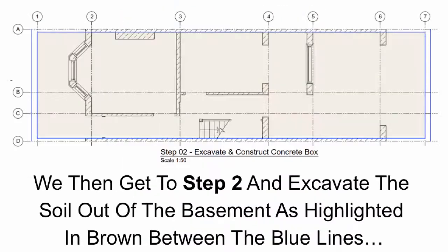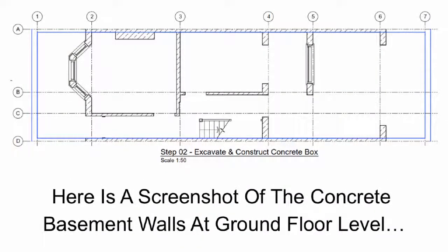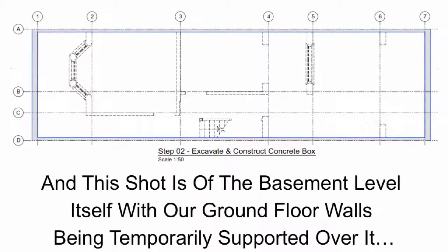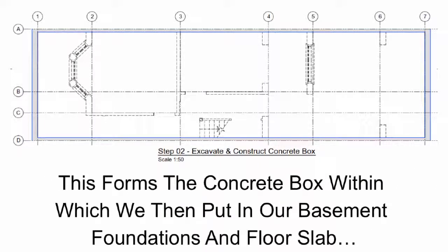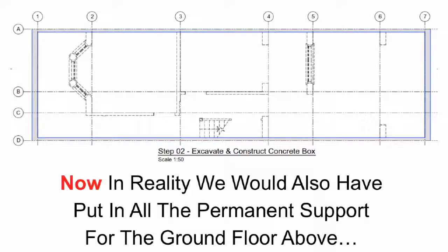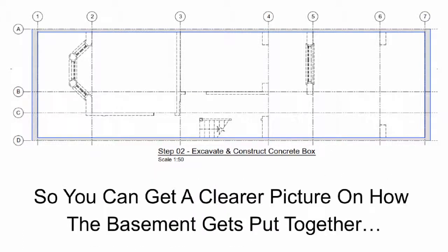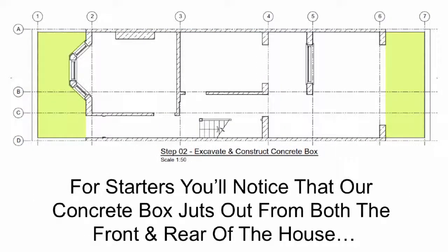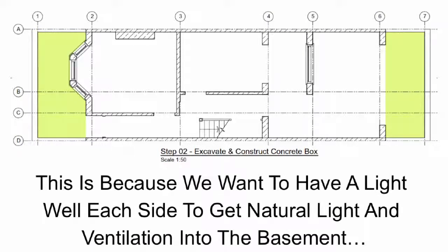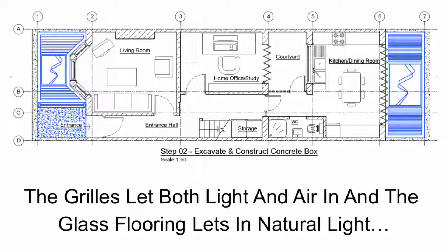Once the temporary works have been constructed we move to step 2 and excavate the soil out of the basement — highlighted in brown between the blue lines — and construct a concrete retaining wall all the way around the perimeter of the house. This forms the concrete box within which we put in our basement foundations and floor slab, and within which we put in the rooms and spaces that we want. You'll notice that our concrete box juts out from both the front and rear of the house — this is because we want to have a light well each side to get natural light and ventilation into the basement. At ground floor level there is grill flooring and a glass floor at each end: the grills let both light and air in and the glass flooring lets in natural light.